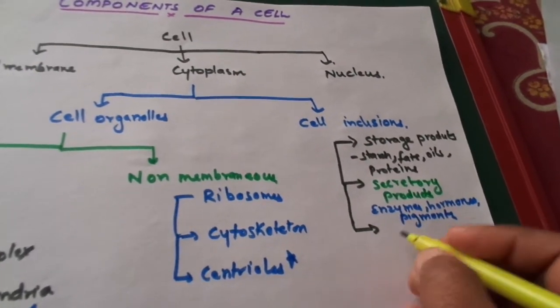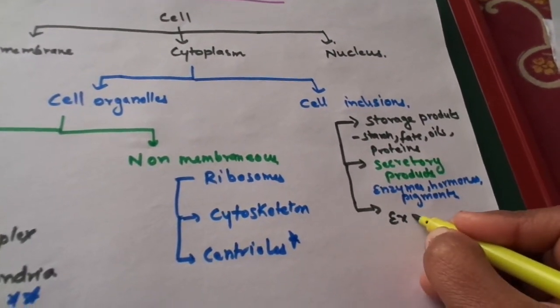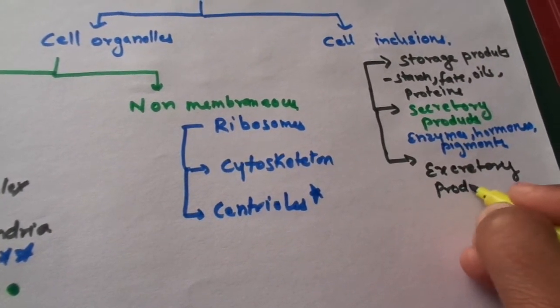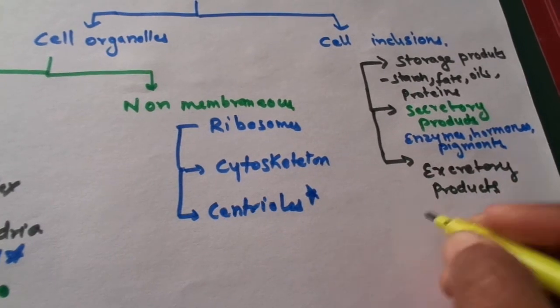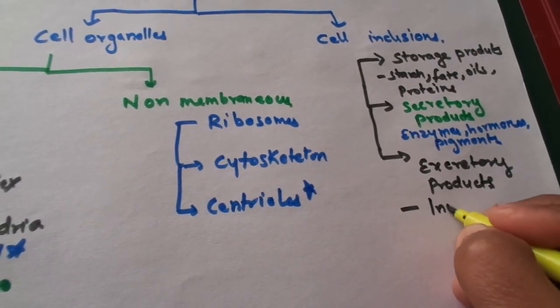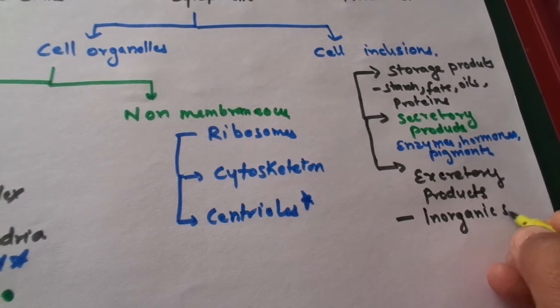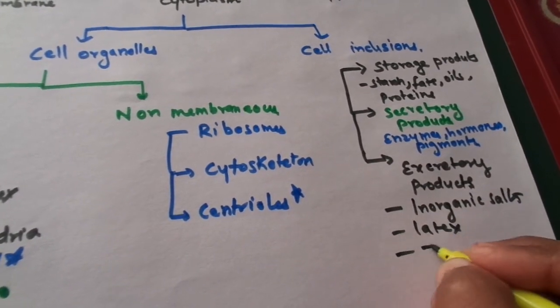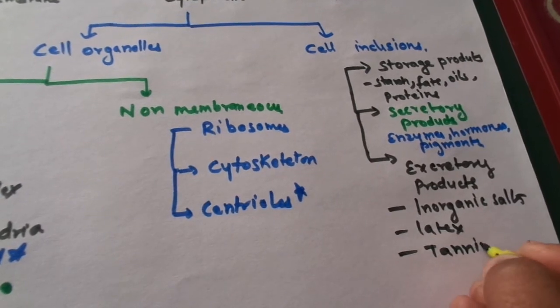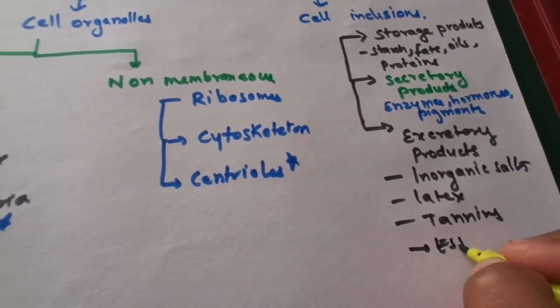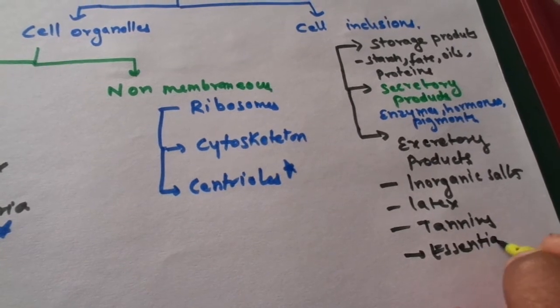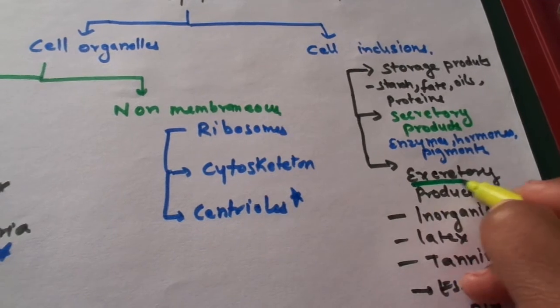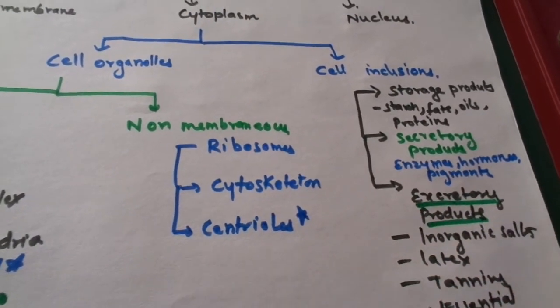And the third one is excretory products. The excretory products contain inorganic salts, latex, tannins and essential oils. These excretory products are present specifically in plant cells only.